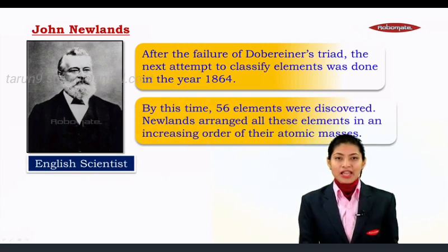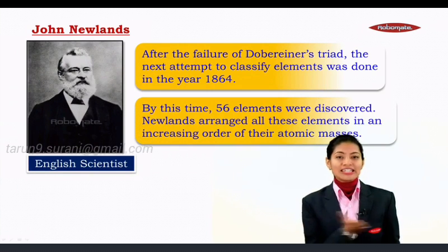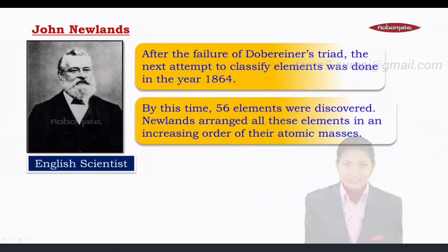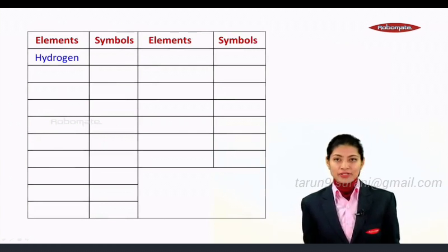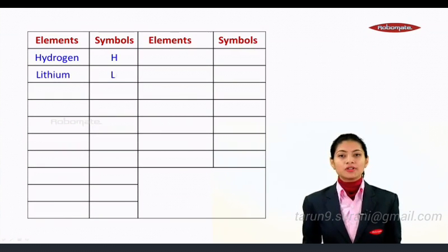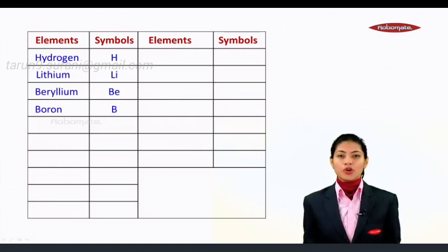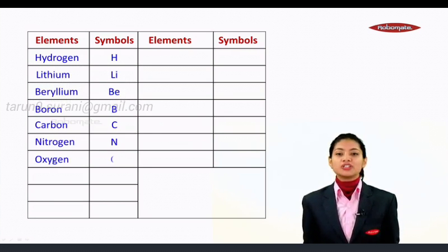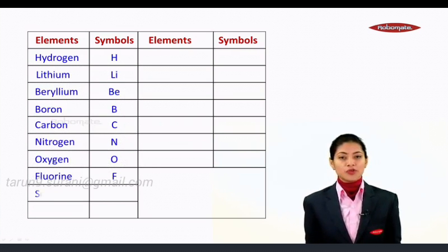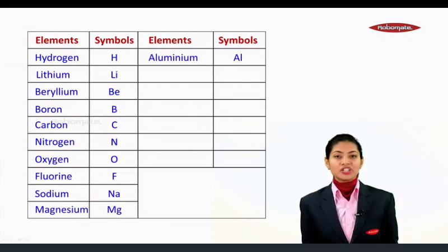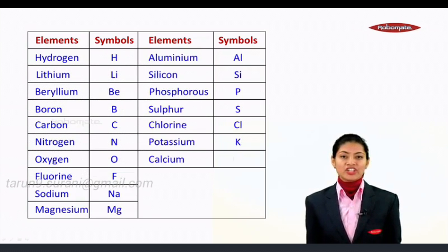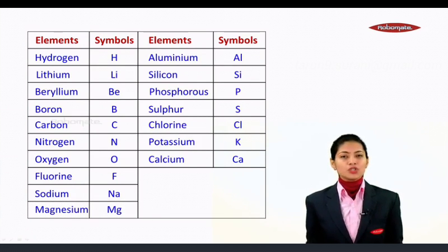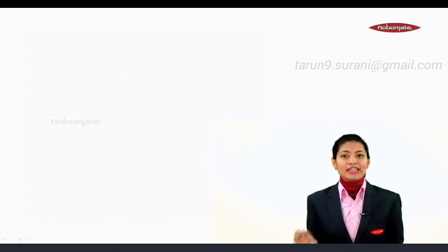Newlands arranged all these elements in the increasing order of their atomic masses. Some of these elements that were included in the table were hydrogen, lithium, beryllium, boron, carbon, nitrogen, oxygen, fluorine, sodium, magnesium, aluminum, silicon, phosphorus, sulfur, chlorine, potassium, and calcium, to name a few.